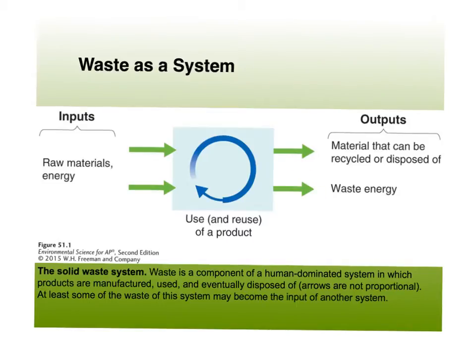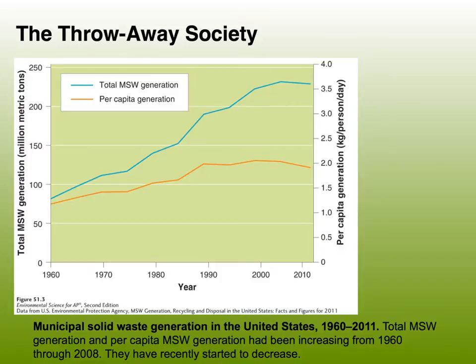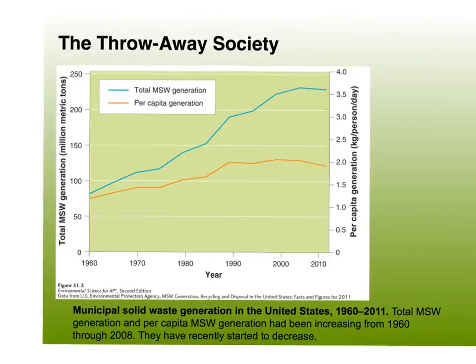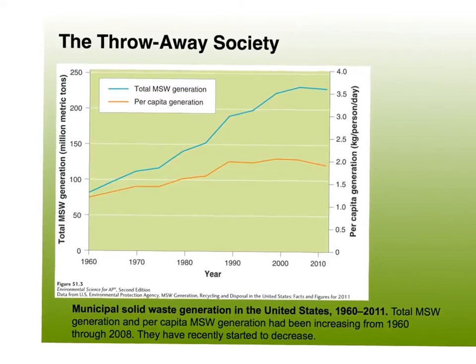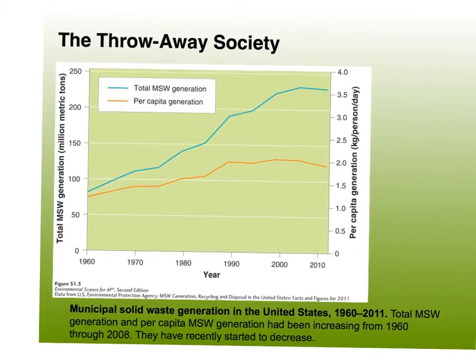We're getting maybe a lot more built-up stuff at the end - the arrows in the diagram are not proportional, so we're not getting equal in to out. This graph is a double y-axis, so you have to be very careful when reading it.